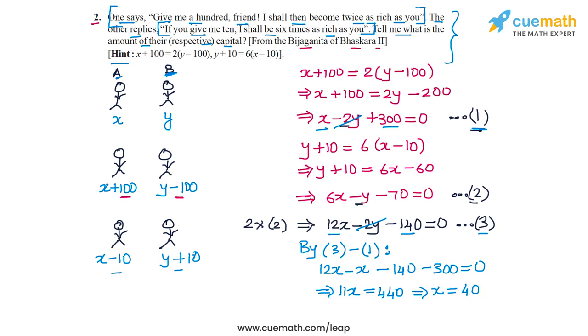Now that I have the value of X, I can find the value of Y by substituting this into an equation. Let's substitute the value of X into the first equation. We will get 40 minus 2Y plus 300 equal to zero. From here I get 2Y is equal to 340 or Y is equal to 170.